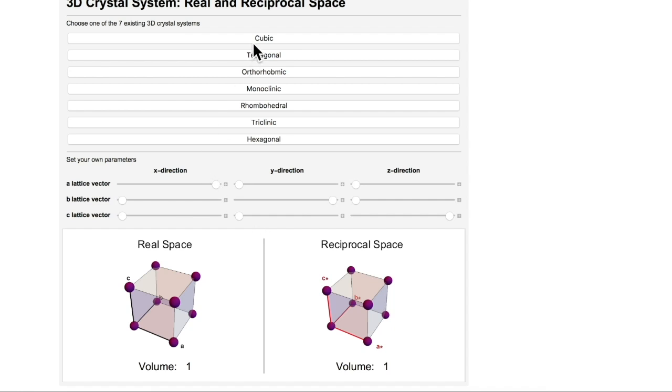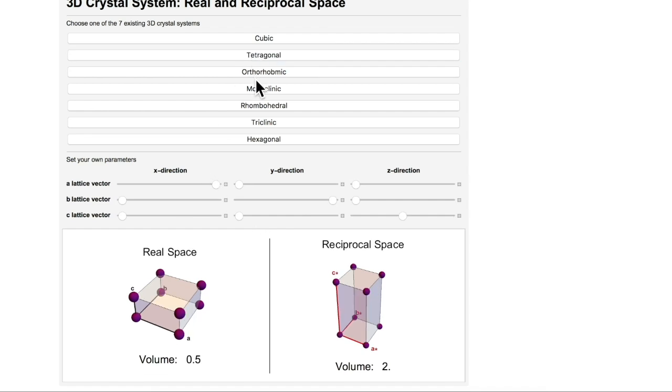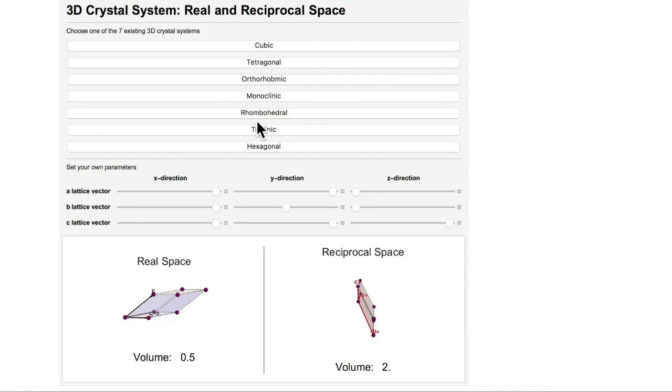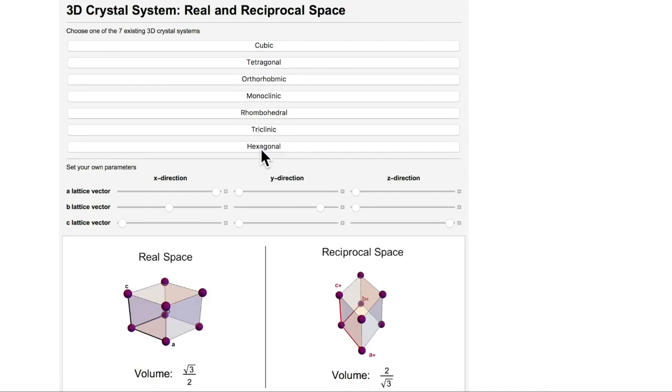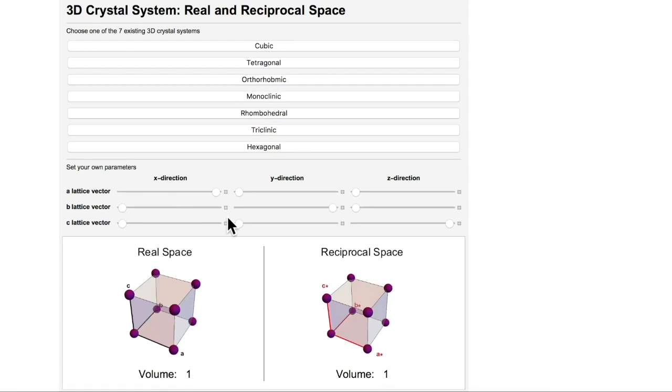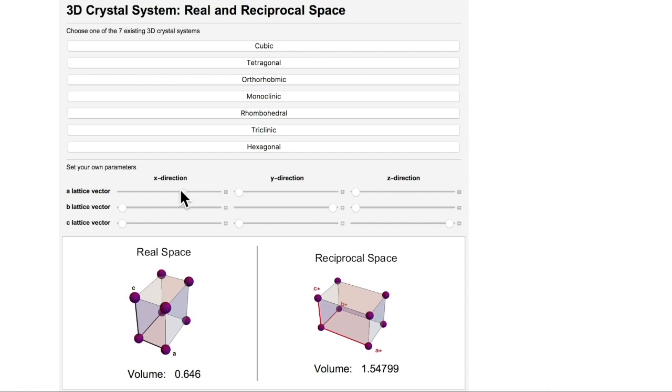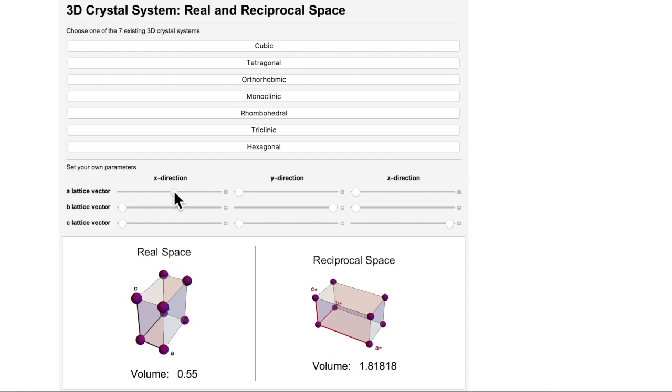As you can see, as I change the size of the real unit cell, the volume between the two cells move in opposite directions. As the lattice vectors change, the change in shape and volume of the unit cells are clearly different.